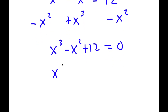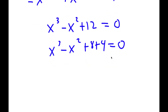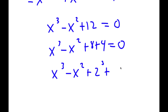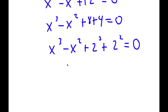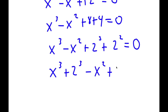Now I'm going to rewrite 12 as 8 plus 4. Now 8 is the same thing as 2 to the power of 3, and 4 is the same thing as 2 to the power of 2. So if I switch the order, I get x to the power of 3 plus 2 to the power of 3, minus x to the power of 2 plus 2 to the power of 2, is equal to 0.